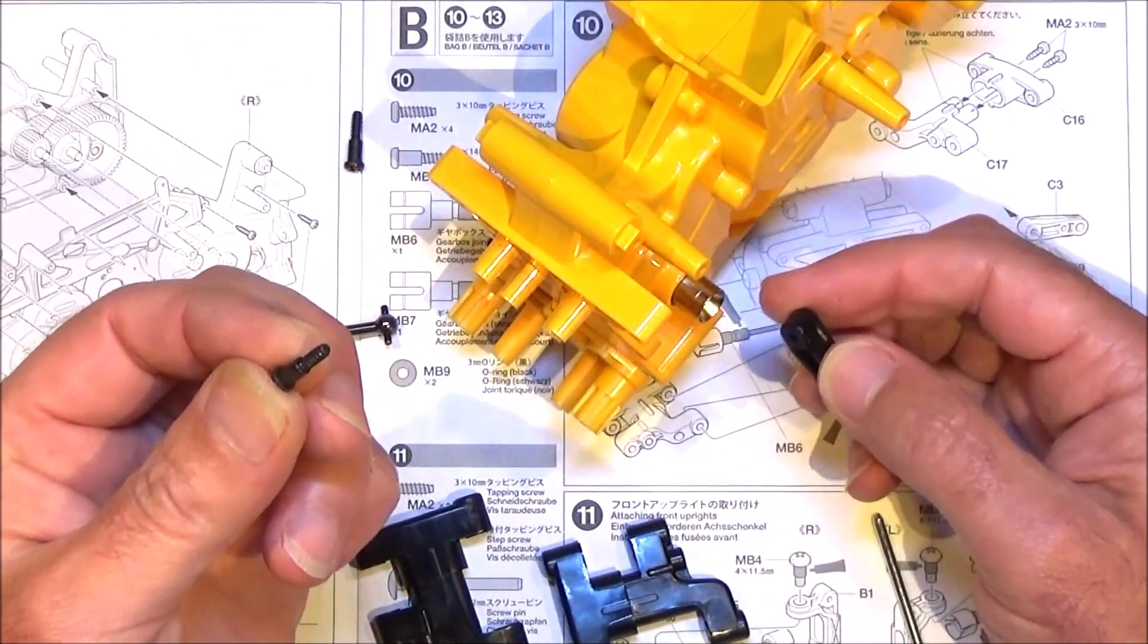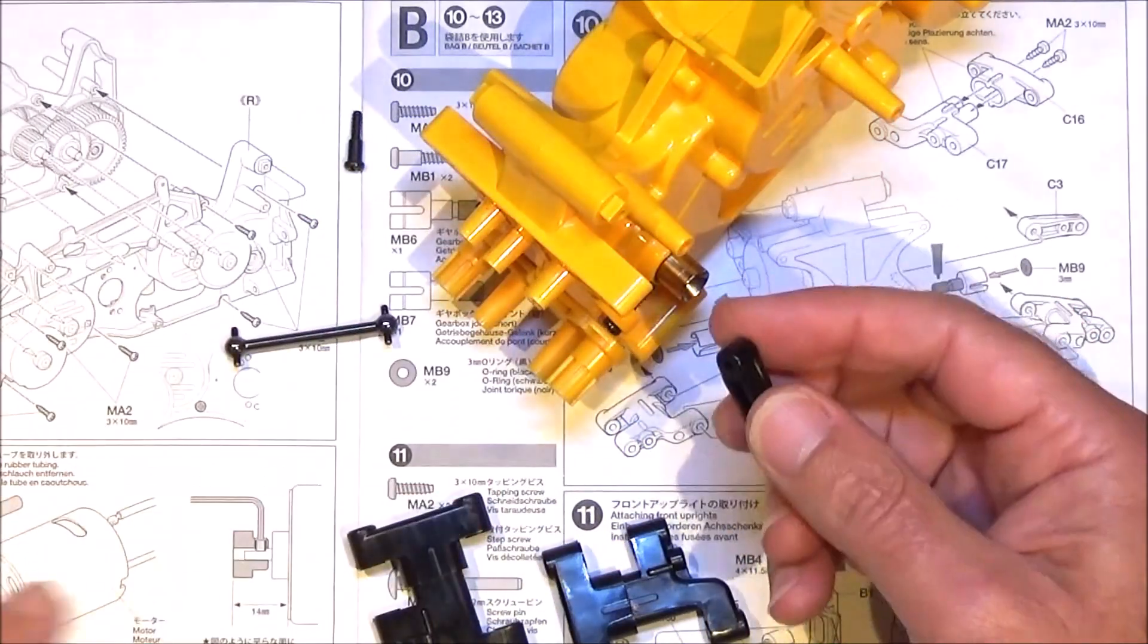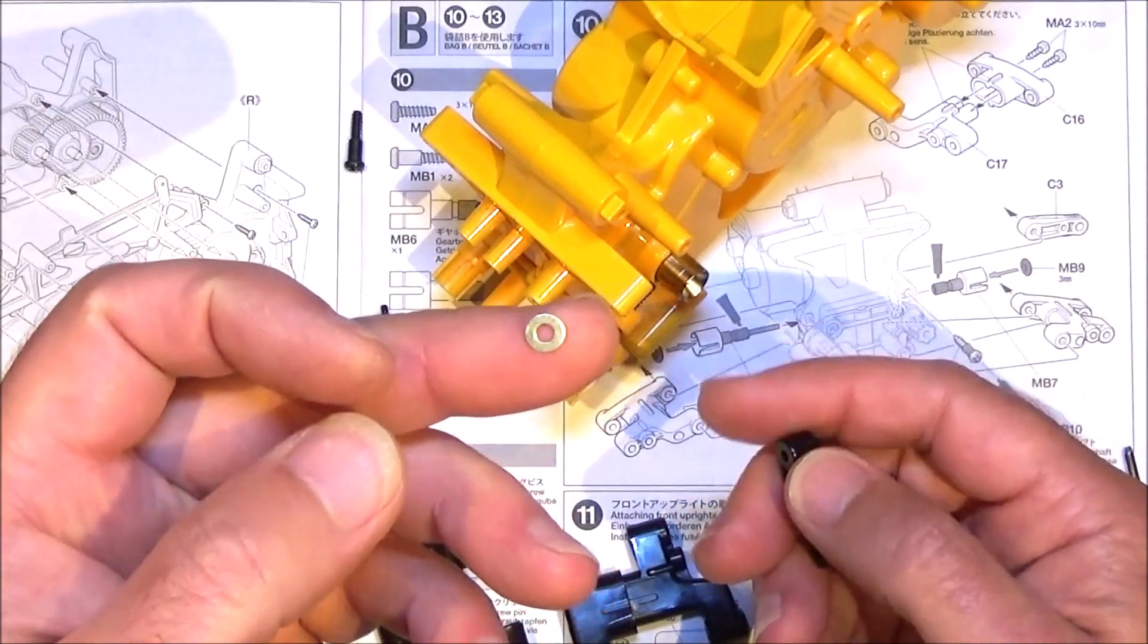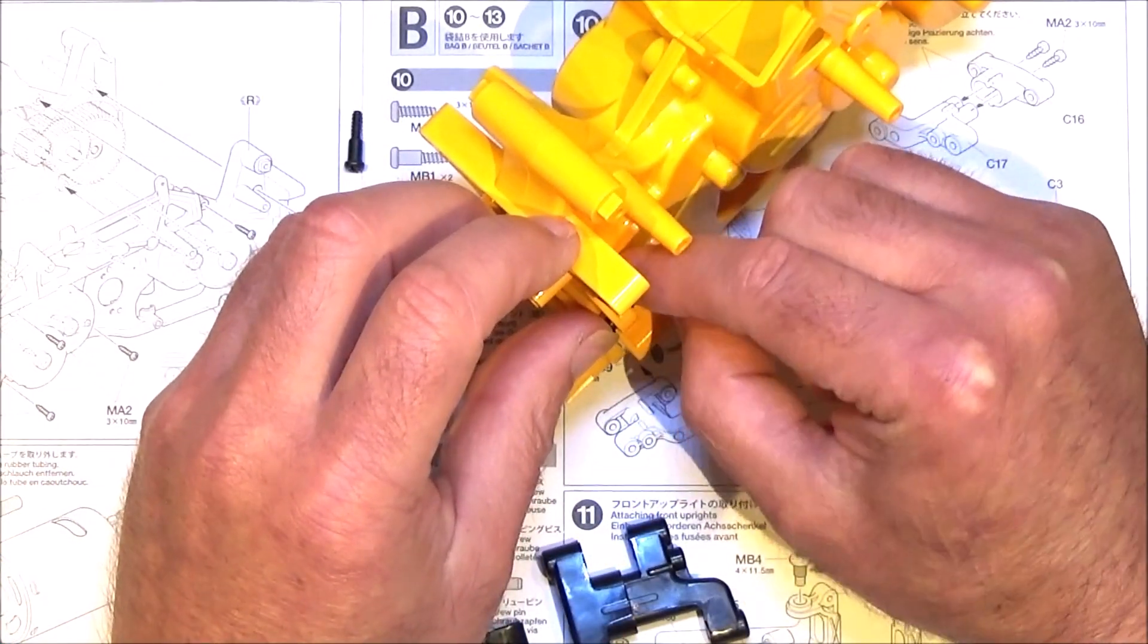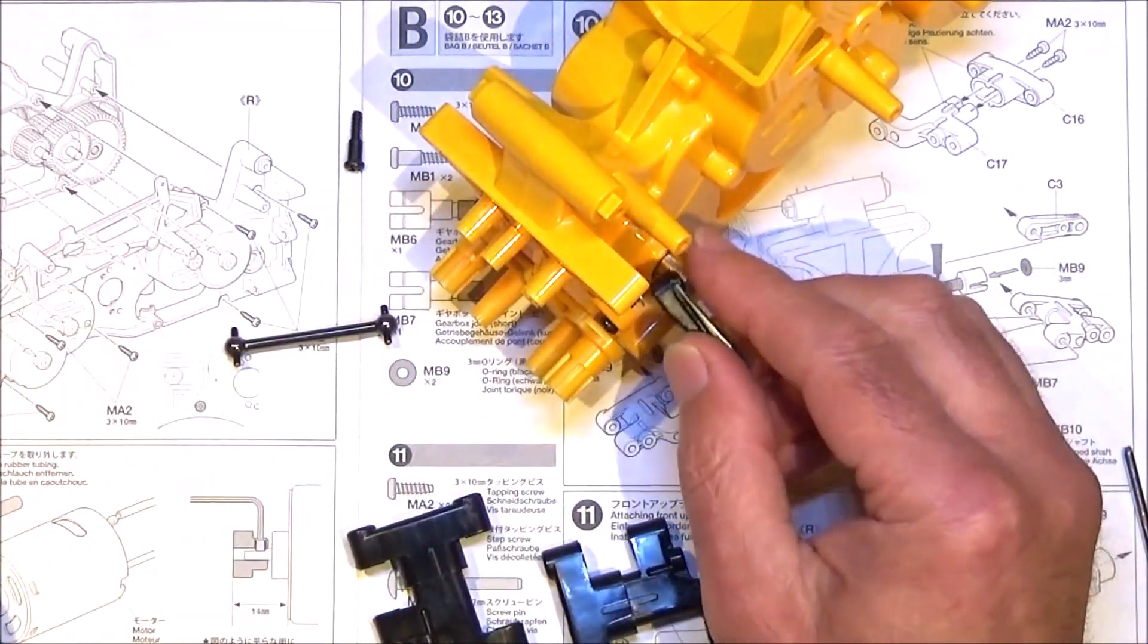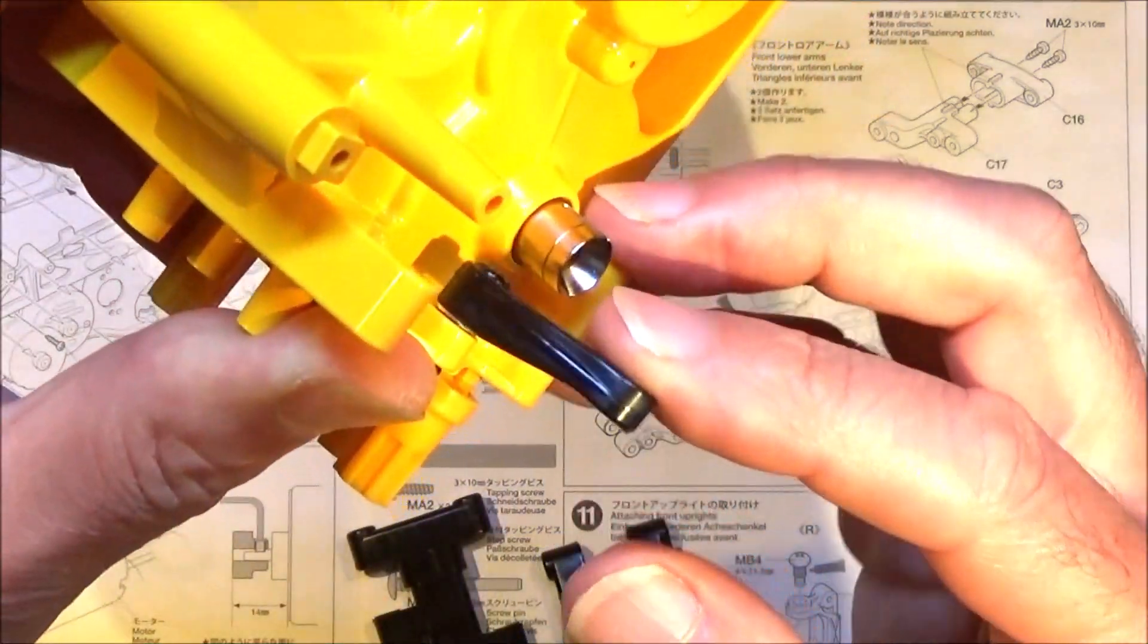You need your step screw. A little tip again - just to make sure you don't have plastic pivoting against plastic, put a little 3mm washer onto that step screw and then tighten it up. It should look like that.